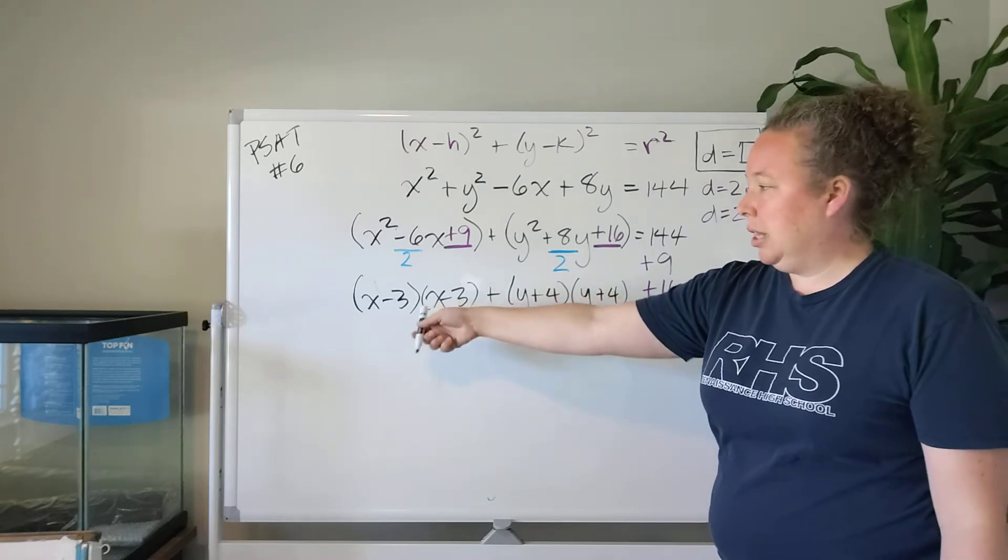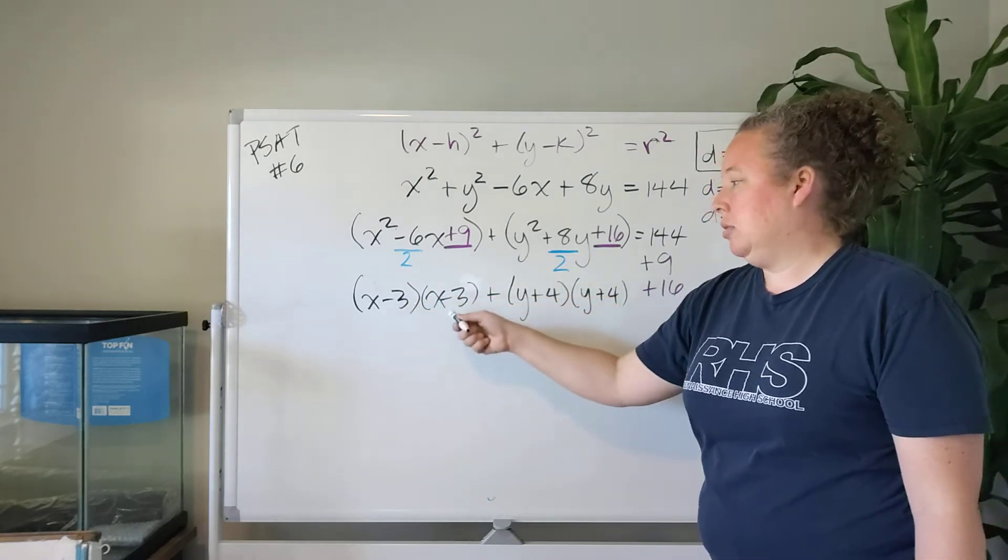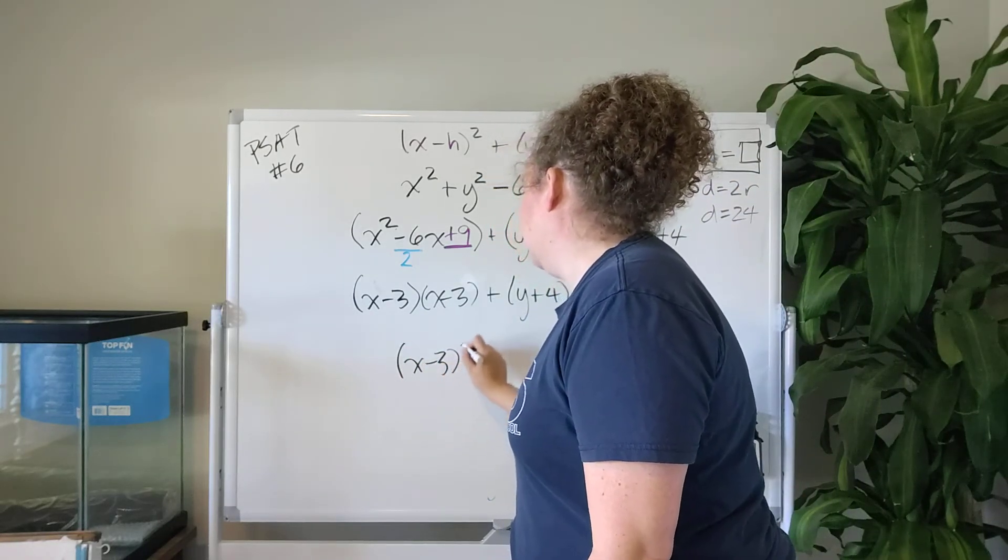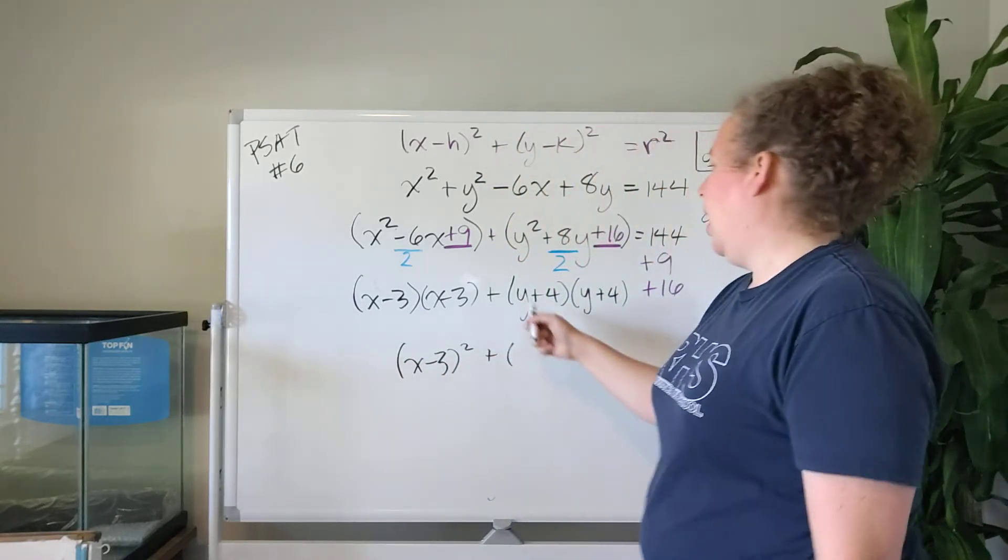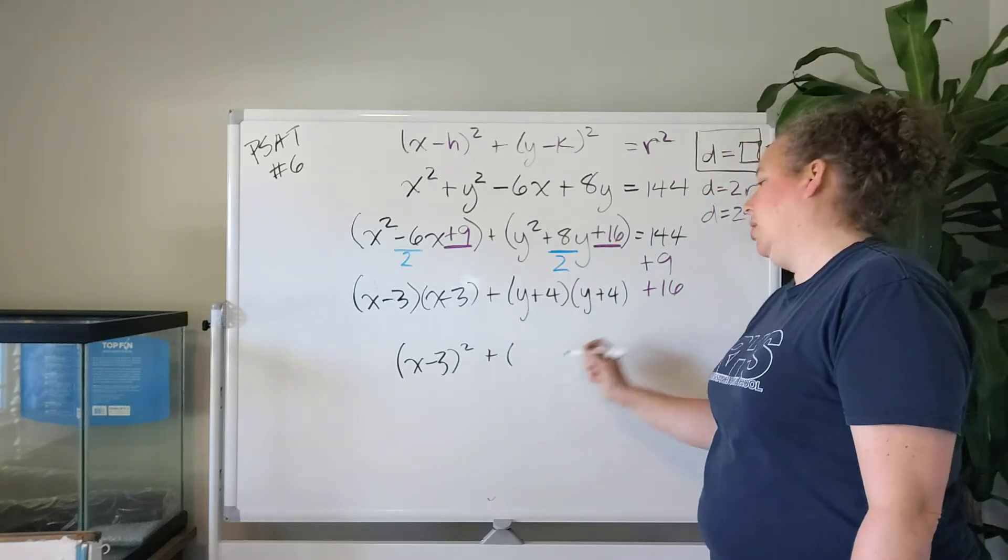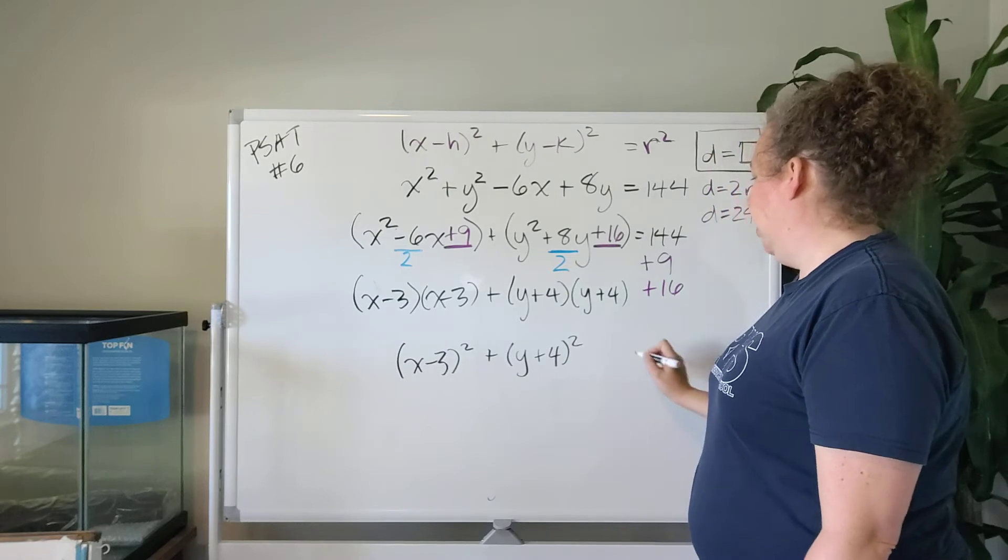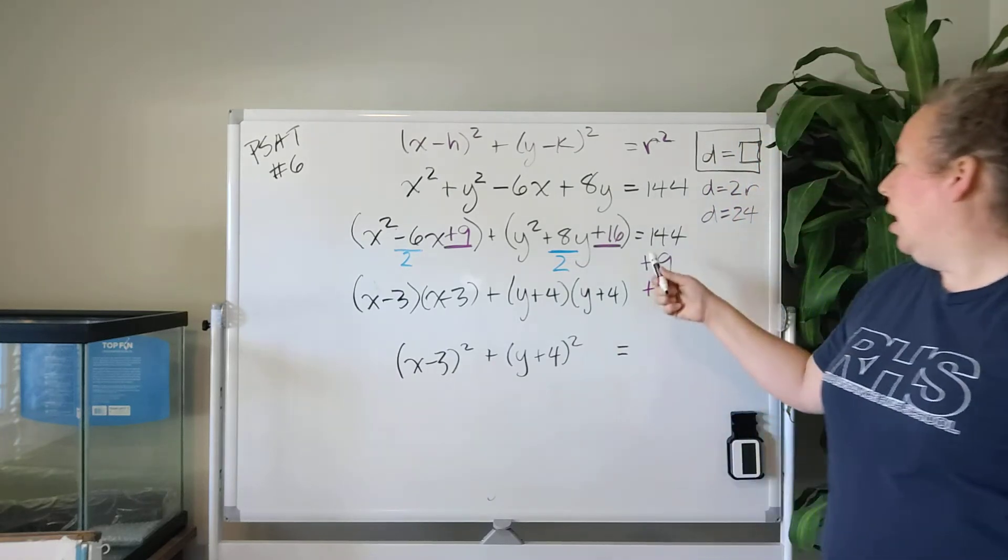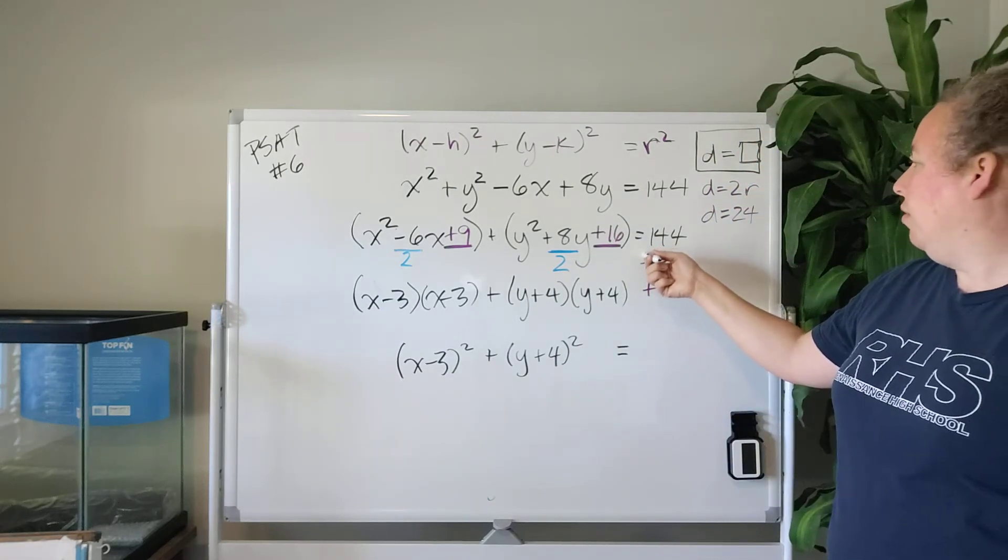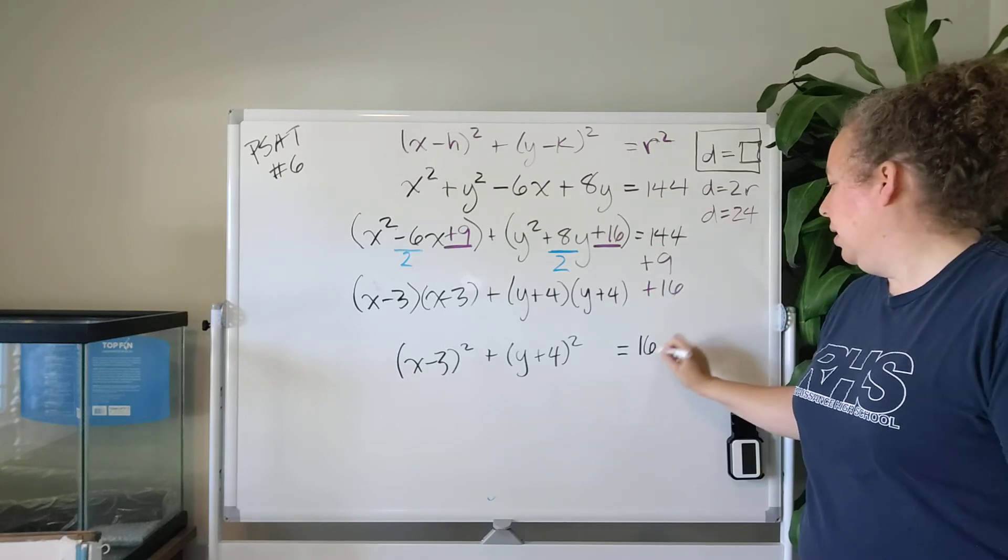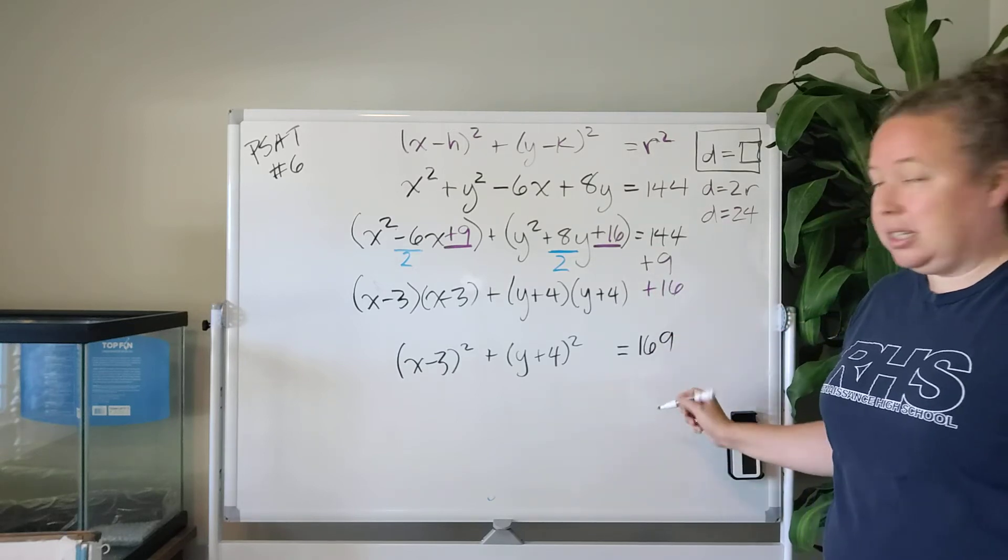But of course if we factor it like this, the other way to write x minus 3 times x minus 3 is x minus 3 squared. And the other way to write y plus 4 times y plus 4 is y plus 4 squared. And now we can add 144 plus 9 plus 16. This is 169.